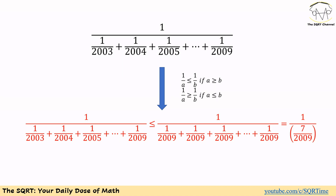The fraction 1 over (1/2003 + 1/2004 + ... + 1/2009) is going to be less than or equal to 1 over (1/2009 + 1/2009 + ... + 1/2009). In total we have 7 terms, so the whole expression is less than or equal to 1 over 7/2009.